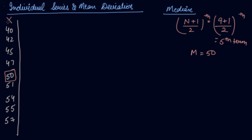Now, this is the series X. What you do is take the deviation of the series from the median. The median is 50. 40 minus 50 is minus 10, 42 minus 50 is minus 8, 45 minus 50 is minus 5, 47 minus 50 is minus 3, 50 minus 50 is 0, 51 minus 50 is 1, 54 minus 50 is 4, 55 minus 50 is 5, 57 minus 50 is 7.